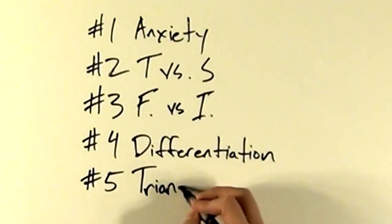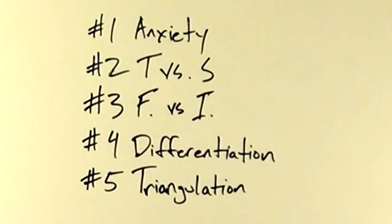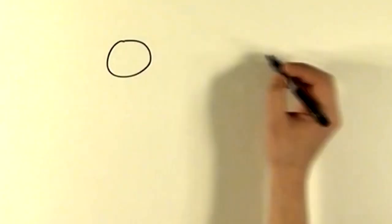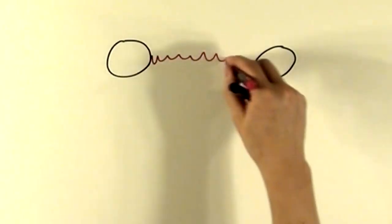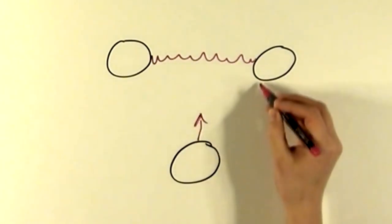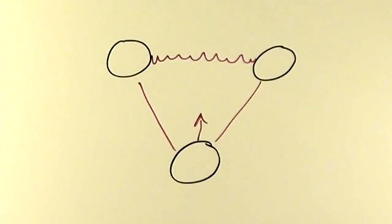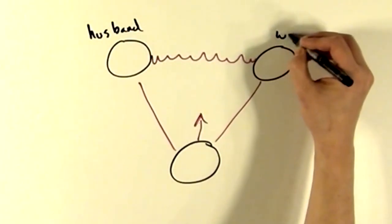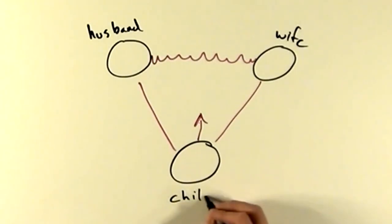Number five, triangulation. Aside from differentiation, this is his other famous concept. Bowen believed that when two people experience relational tension, they tend to pull in a third party to dissipate that tension. Here are some examples of triangles.